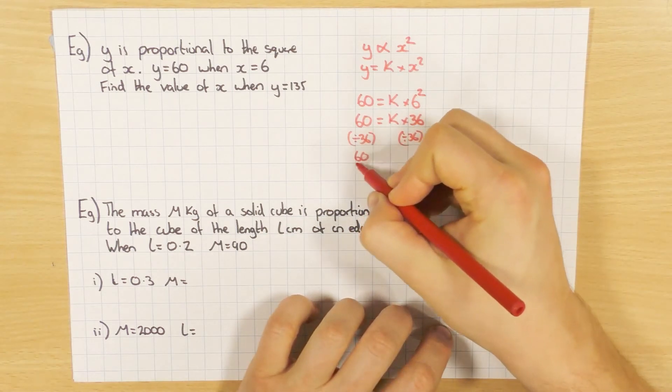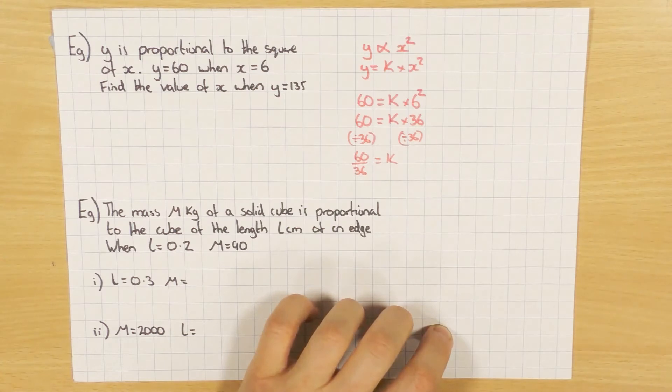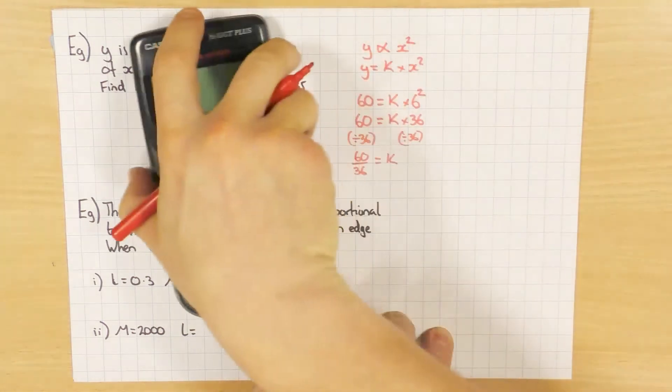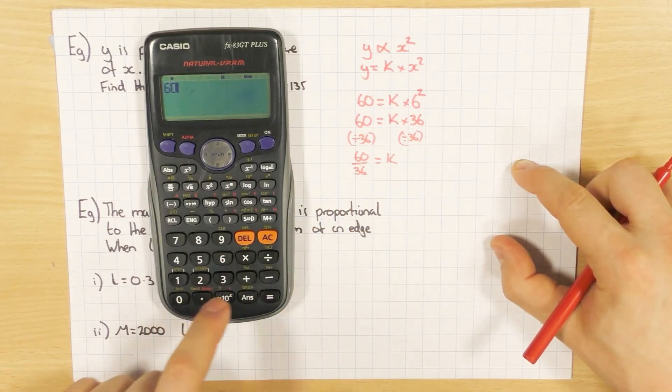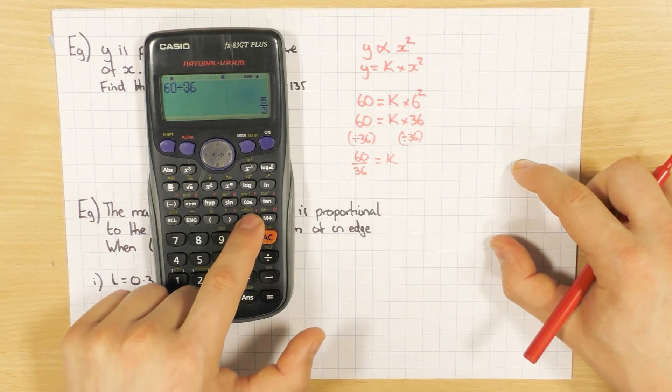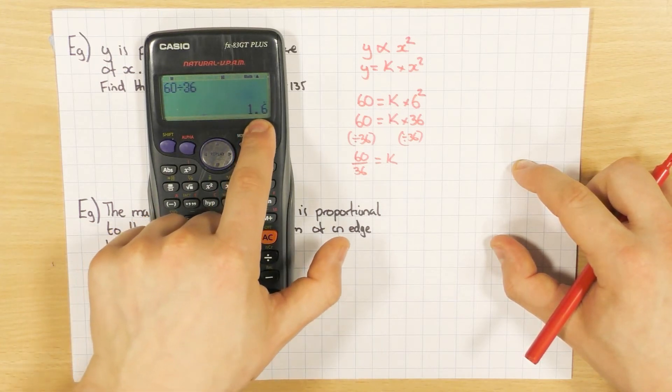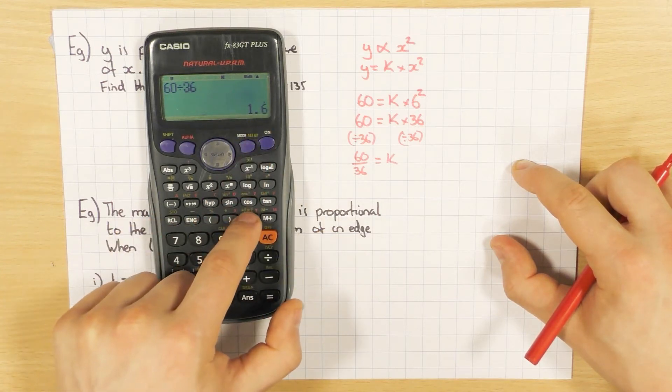And then that's going to give me 60 over 36 for my value of k. Now this is an example that if you were to do 60 divided by 36 it goes to 5 over 3. But if I press the SD button you can see it's a recurring decimal. So don't be fooled into doing that as 1.6 because you'll get the wrong answer. Keep this one as a fraction.